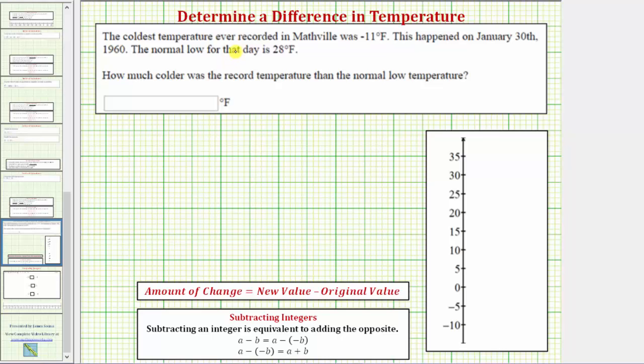The coldest temperature ever recorded in Mathville was negative 11 degrees Fahrenheit. This happened on January 30th, 1960. The normal low for that day is 28 degrees Fahrenheit. How much colder was the record temperature than the normal low temperature?